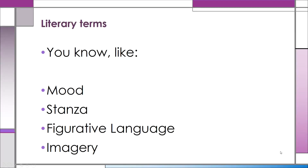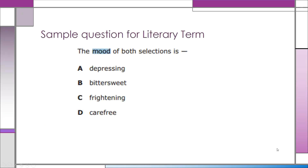Literary terms — things like mood, stanza, figurative language, and imagery — those vocabulary words that you've been hearing about ever since kindergarten. Here's an example of a question that has a literary term: The mood of both selections is — and then it lists different moods you can choose from.